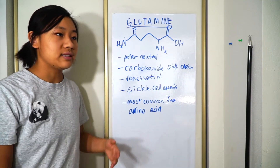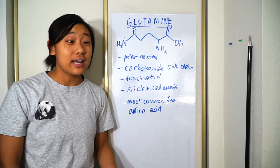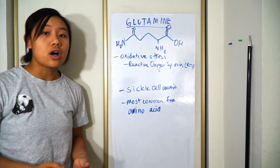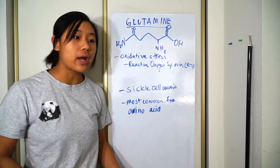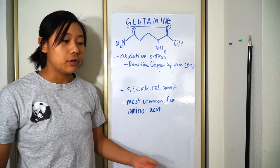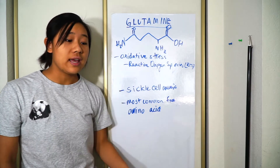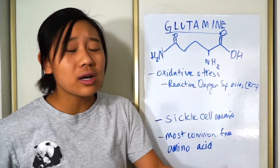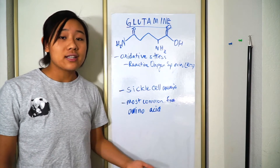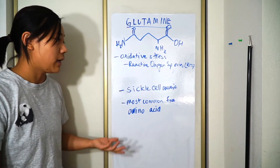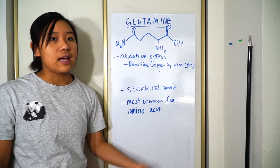One of the issues with sickle cell anemia is that it causes high oxidative stress. Oxidative stress is caused by reactive oxygen species, otherwise known as ROS. These are free radicals that float around your body and damage your DNA because they're highly reactive. Your body normally maintains homeostasis by providing antioxidants, which neutralize the reactive oxygen species so these reactive molecules can't harm DNA.